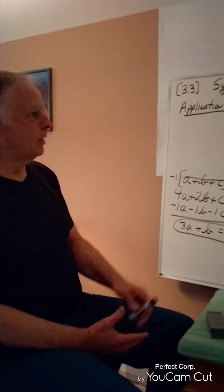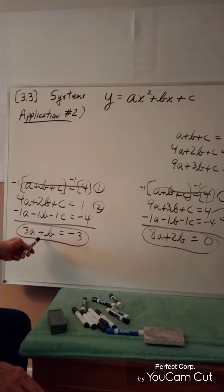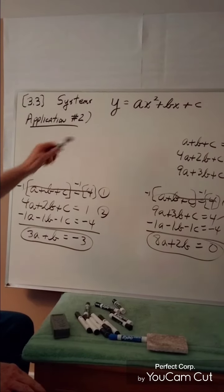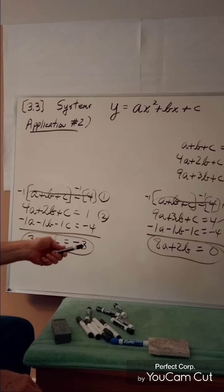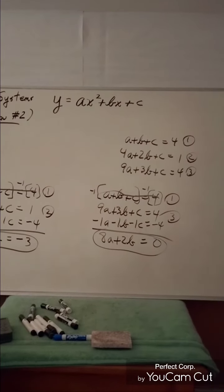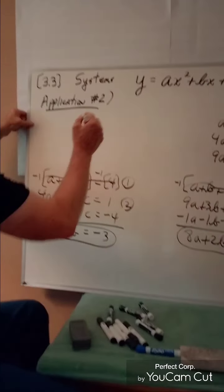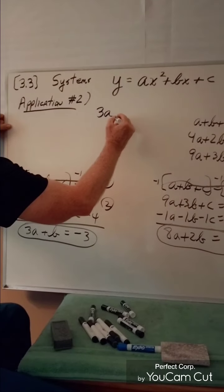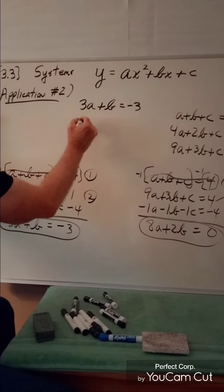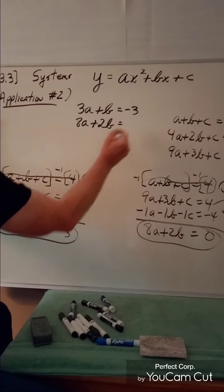We've now come up with two linear equations in two variables. Writing them in standard form: 3a + b = -3, and 8a + 2b = 0.